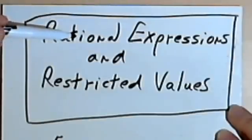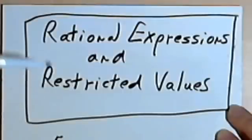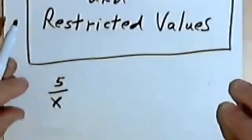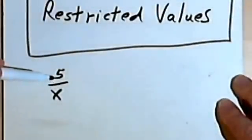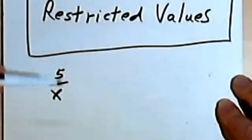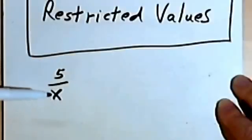This video is going to be about rational expressions and restricted values. And once you understand what the words mean, it's really pretty easy stuff. So a rational expression is basically just a fraction, but it's an algebraic fraction. In other words, it can have x's or y's, it can have variables in it.